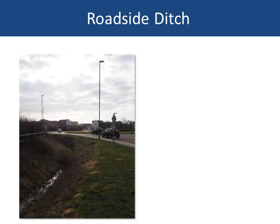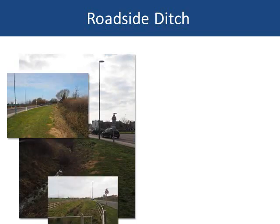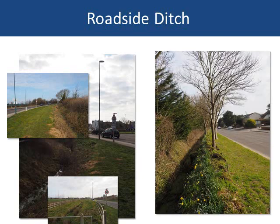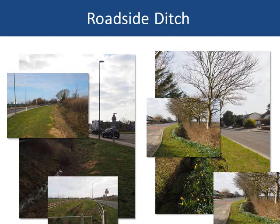There are three categories of roadside ditch. First, a ditch created by the highway authority and owned by them solely for draining the highway — this is the responsibility of the highway authority. Second, a ditch on the roadside of fences and hedges, taking land drainage as well as highway drainage — this is the responsibility of the riparian owner. Third, a ditch on the field side of a fence or hedge, taking land drainage as well as highway drainage — also the responsibility of the riparian owner.